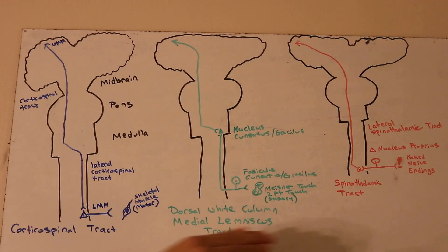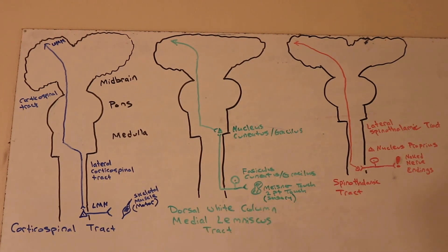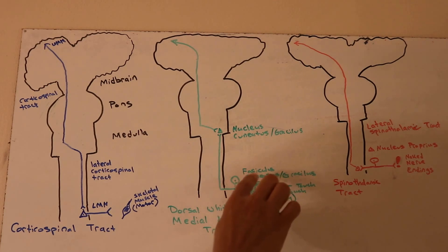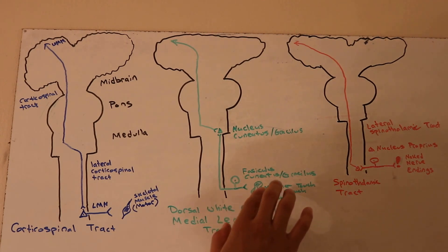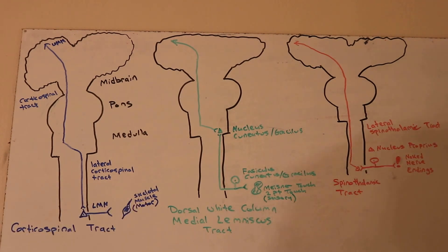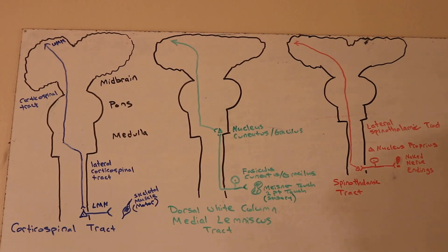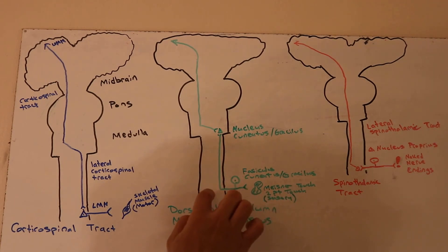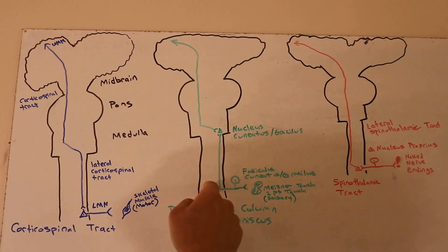Unlike the motor tract, these two sensory tracts start at the bottom. You have Meissner's touch corpuscles in your fingertips, for example. If you touch something, the signal travels through your fasciculus cuneatus or fasciculus gracilis tract. These depend on whether information is coming from your upper or lower extremities. Fasciculus cuneatus starts at T6, while fasciculus gracilis starts at the bottom of your spinal cord and goes up.